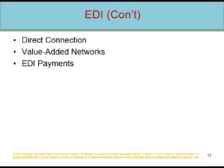EDI on the internet is called Internet EDI, Web EDI, or Open EDI — open because the internet is an open architecture network. EDIInt, Electronic Data Interchange Internet Integration, is the most common protocol for internet EDI transaction sets. EDI exchanges are encoded using one of two formats: Applicability Statement 2 (AS2) or Applicability Statement 3 (AS3). Secure electronic receipts are returned to senders for every transaction, helping establish non-repudiation.